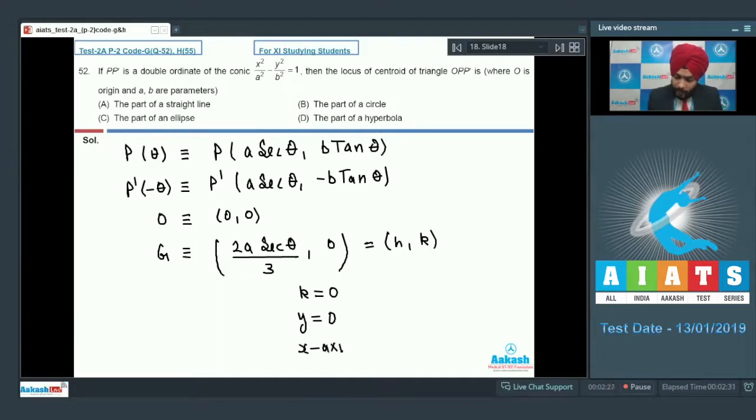It is definitely going to be a part of x axis, not the complete x axis. So option number A is correct. Giving further insight, I can see that the two vertices minus A comma 0 and A comma 0, the line segment between these two points will not be one part of locus. That is why the part of a straight line is the perfect answer for this particular question.